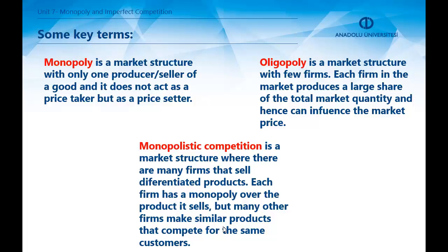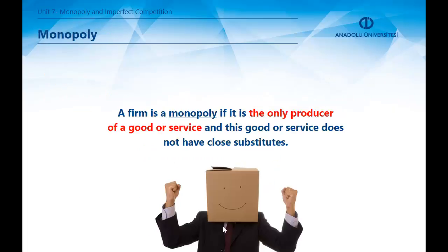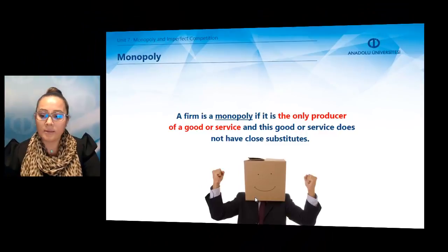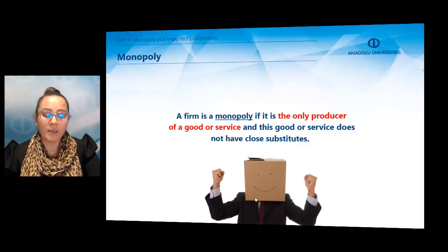In monopolistic competition, each firm has a monopoly over the product it sells, but many other firms make similar products and compete for the same customers. As an example of monopoly, if you own a personal computer, you probably use some version of Windows, the operating system sold by Microsoft Corporation. The copyright gives Microsoft the exclusive right to make and sell copies of the Windows operating system.